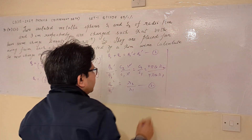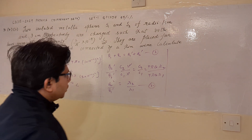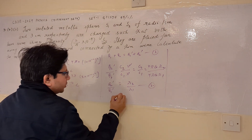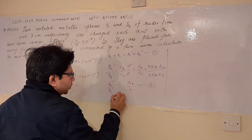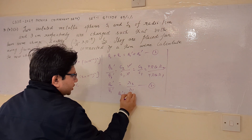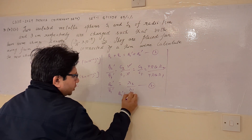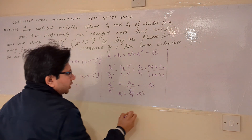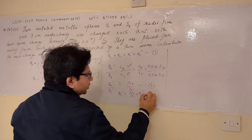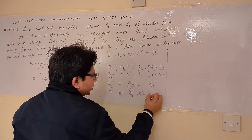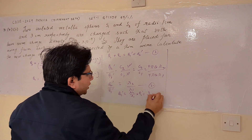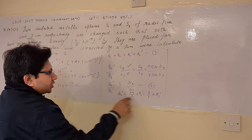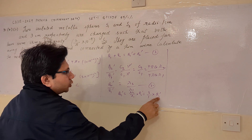We have to calculate the value of Q1'. From equation 2, Q2' = (R2/R1) × Q1', where R2 = 3 cm and R1 = 1 cm, so Q2' = 3Q1'.